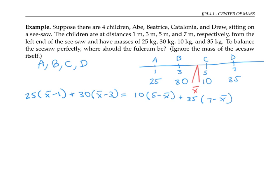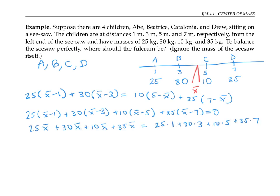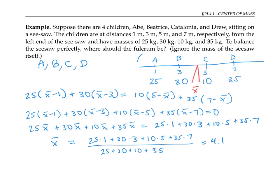This equation can be rearranged as follows. I've subtracted the right-side terms to the other side, but instead of creating a negative sign, I've switched the order — (5 − x̄) becomes (x̄ − 5), and (7 − x̄) becomes (x̄ − 7). Written in this form, we can see that the assumption about x̄ being between B and C doesn't really matter; each term has the same form regardless of which side of the fulcrum the child is on. Distributing and moving constant terms to the right side, then factoring out x̄ and dividing gives an answer of 4.1 — that's how many meters from the left side we need to put the fulcrum.